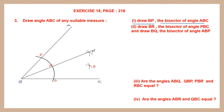Following the question, draw BR — so from B to R we draw a line. Now this BR is the bisector of angle PBC. So we drew BR, the bisector of angle PBC.